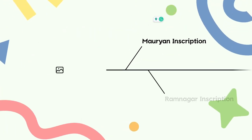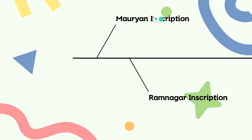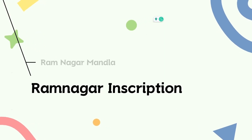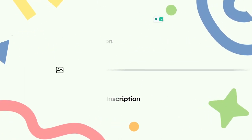The next important inscription is the Ramanagar inscription, and this is basically based on the Gond dynasty or Gondvansh. It provides complete information about all the kings of the Gond dynasty, from Yadavrai onwards, and all this information you will find within this inscription.